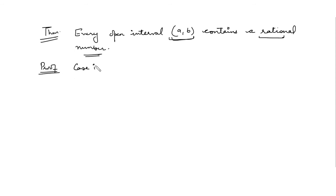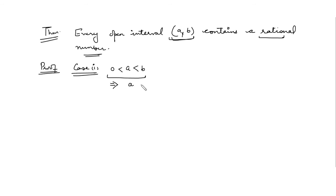We will prove this by considering different cases. Case one: suppose both a and b are positive real numbers. Clearly for the interval, a must be less than b, so b minus a is also a positive number. We can consider b minus a to be epsilon in Corollary 3.